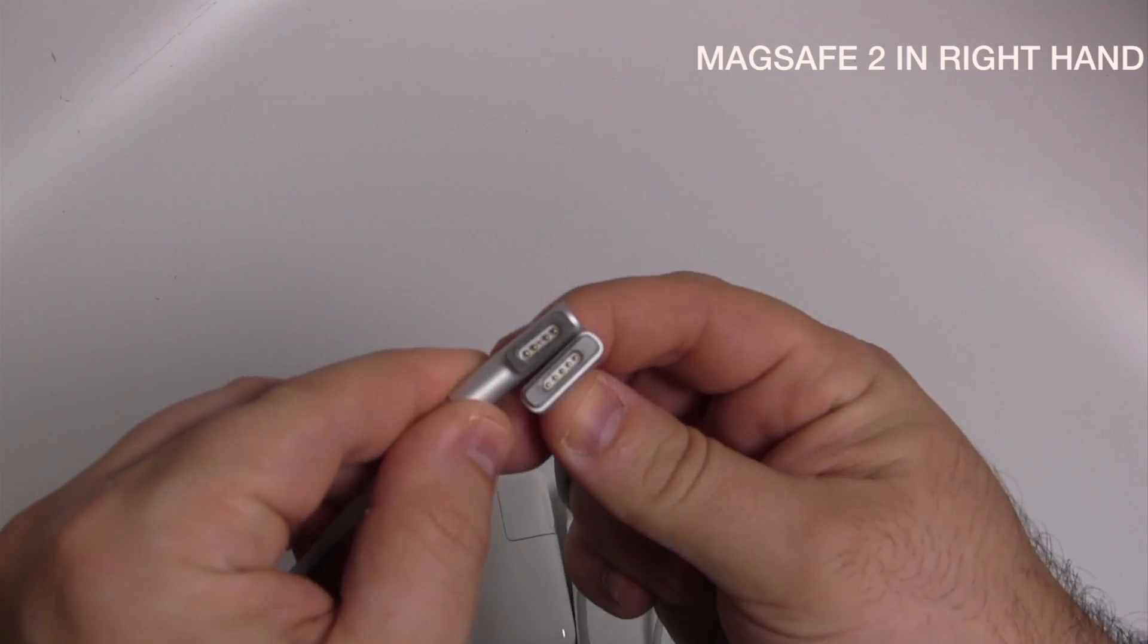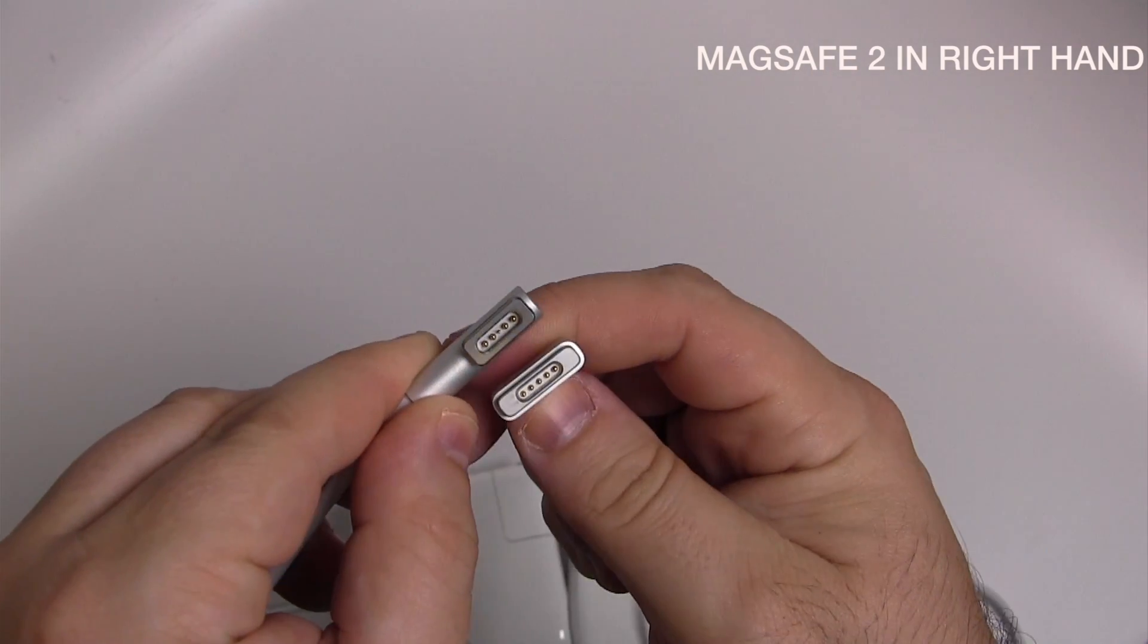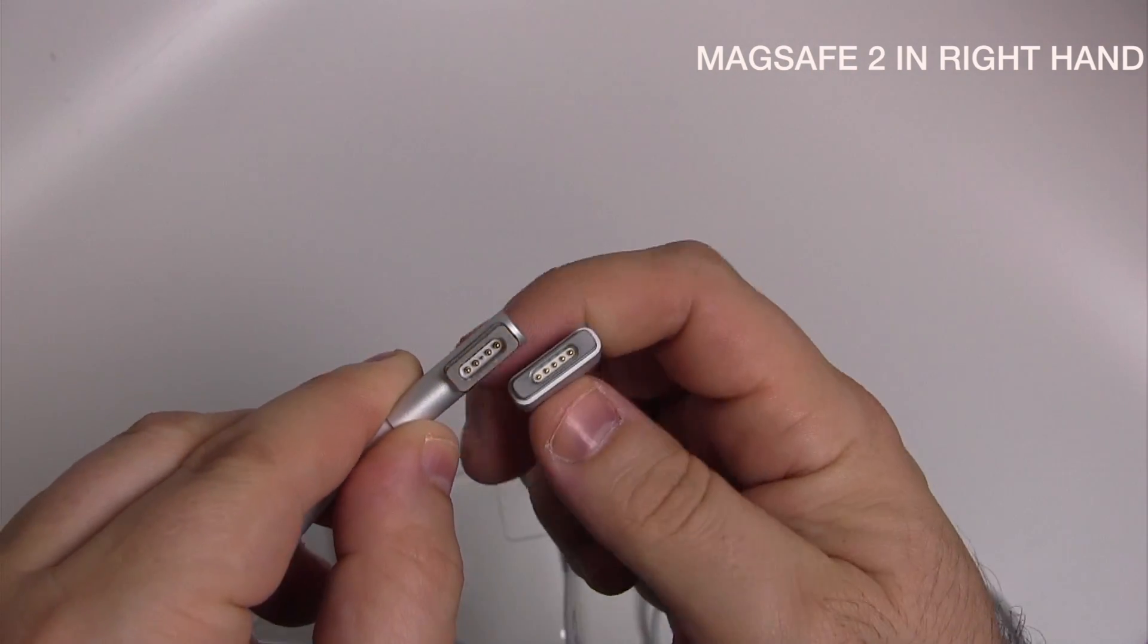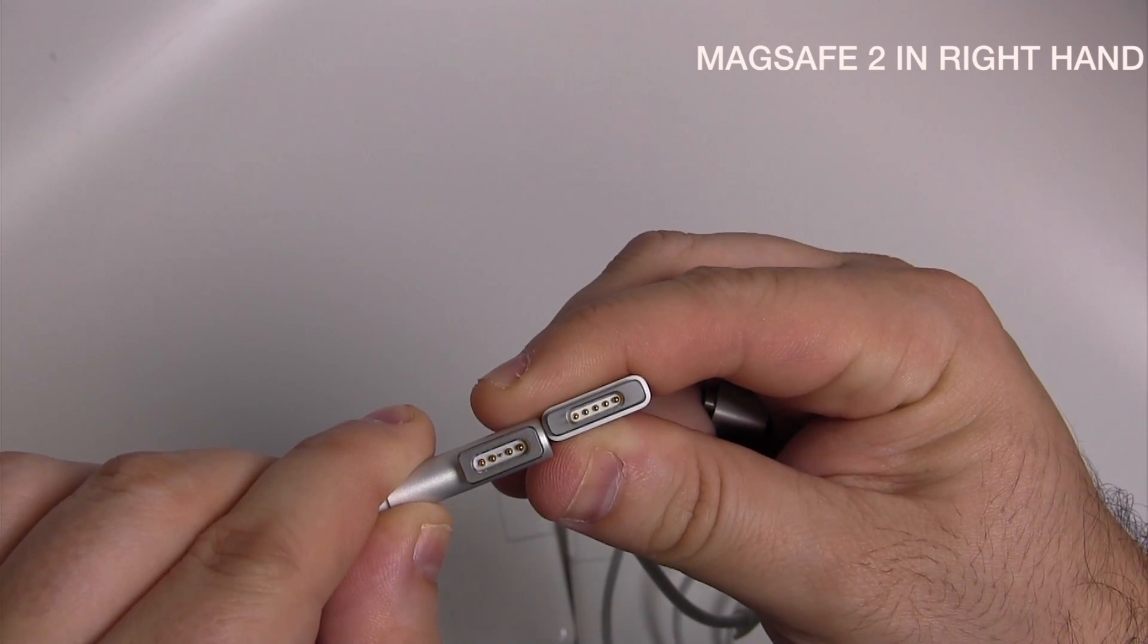As we can see, the original MagSafe is shorter in length than the MagSafe 2. However, it is thicker. The MagSafe 2 is slightly thinner than the original MagSafe.